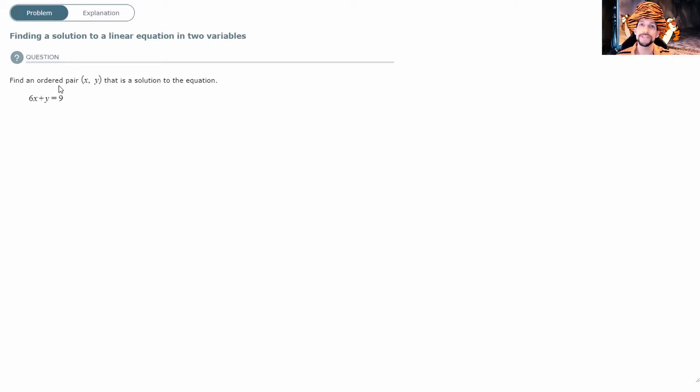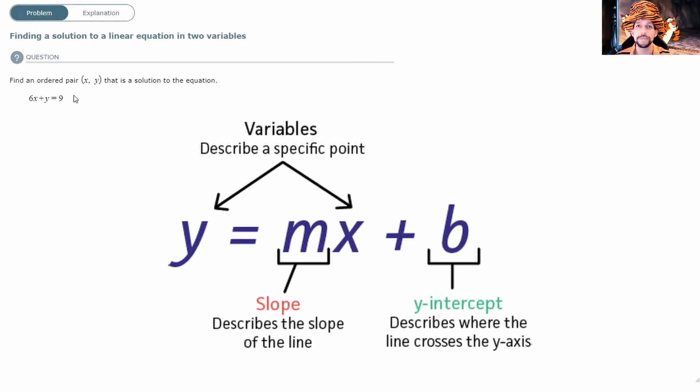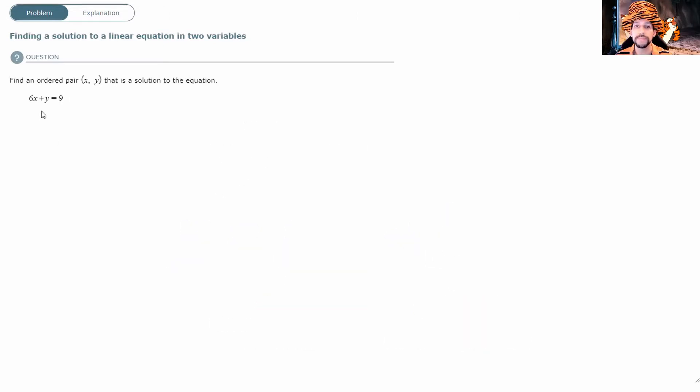Here we are in Alex and we're asked to do something relatively simple, so it seems. To find an ordered pair, so an x and a y value, that is a solution to the equation 6x plus y equals 9. Now x and y are variables, they could be any number. x could be 1, y could be 2, and let's test that.